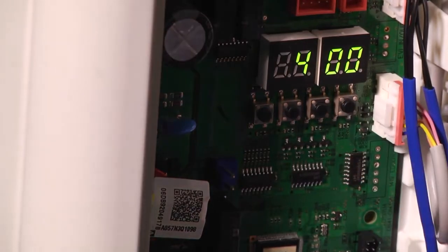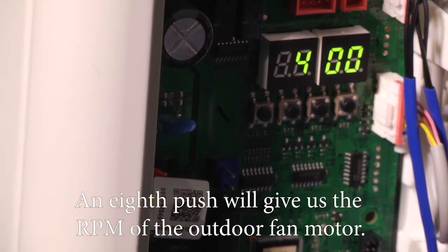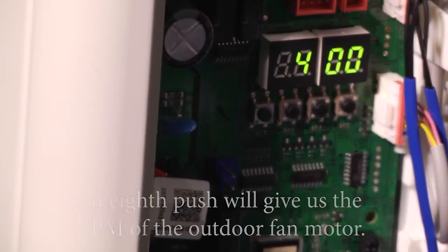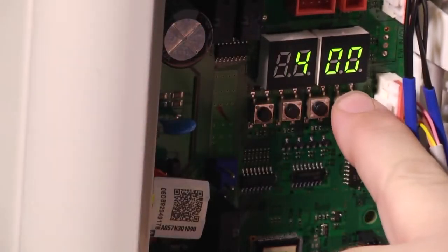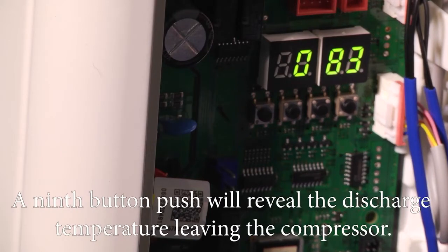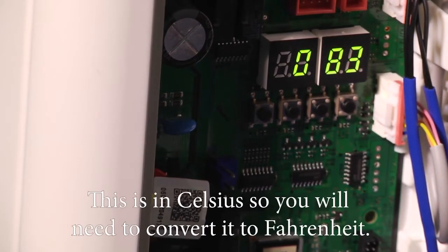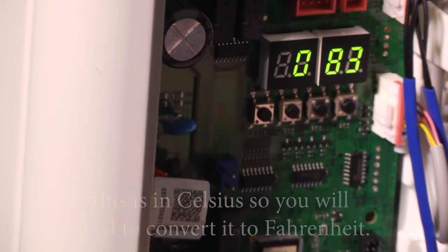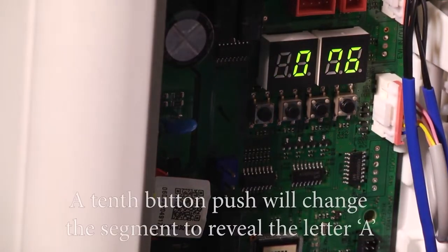An eighth push will give us the RPM of the outdoor fan motor. A ninth button push will reveal the discharge temperature leaving the compressor. This is in Celsius, so you'll need to convert it to Fahrenheit.